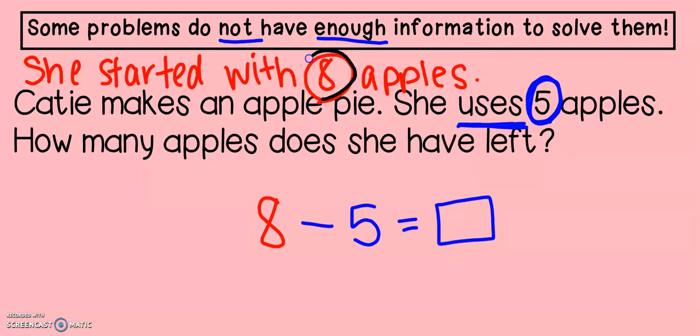Without the starting number, we do not have enough information to solve this problem. I'm going to count down and use my touch points: eight, seven, six, five, four, three. That means that Katie has three apples left. In this problem, we had to add some of our own information in order to solve it.